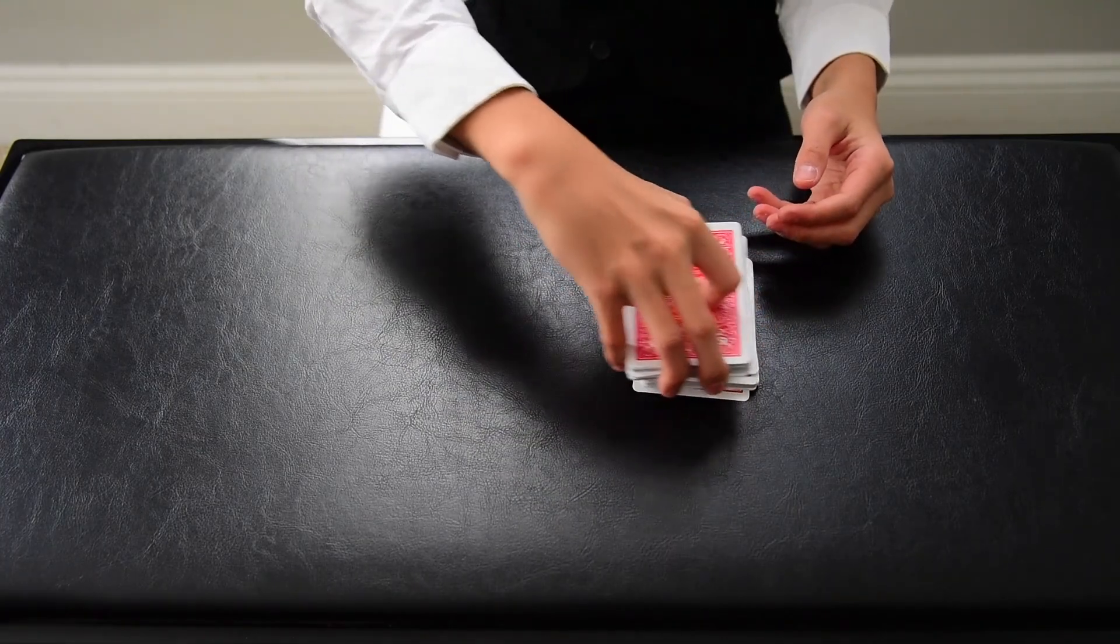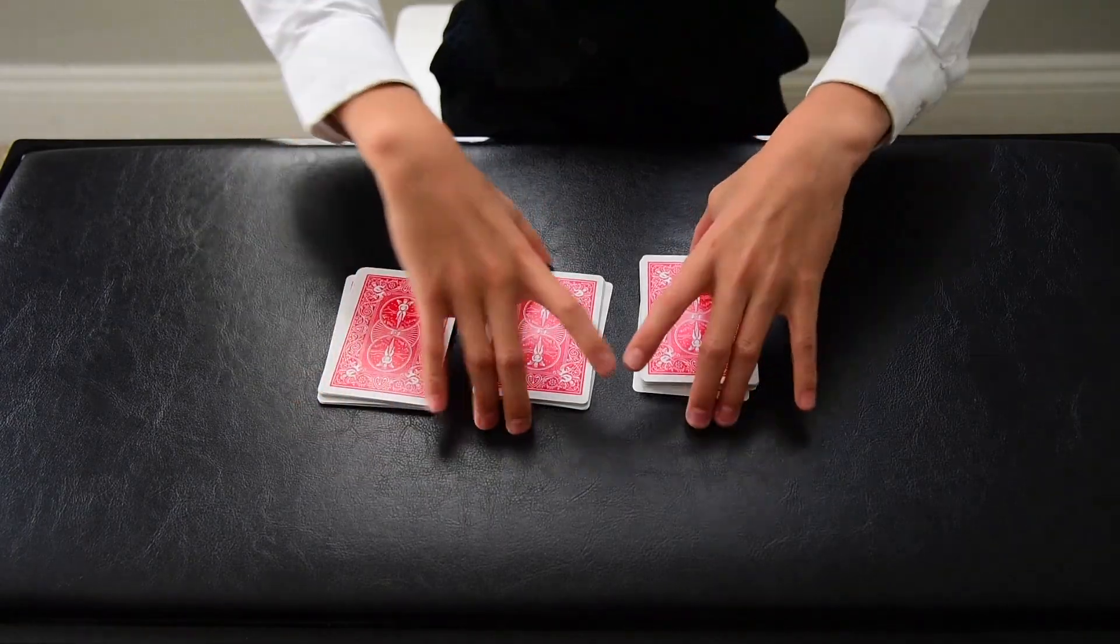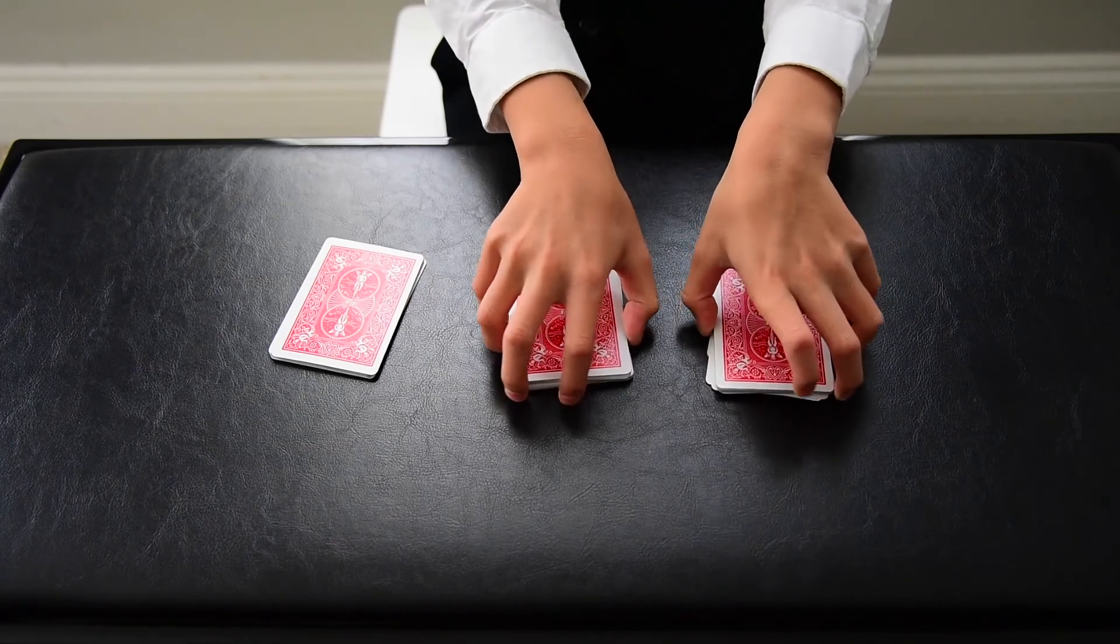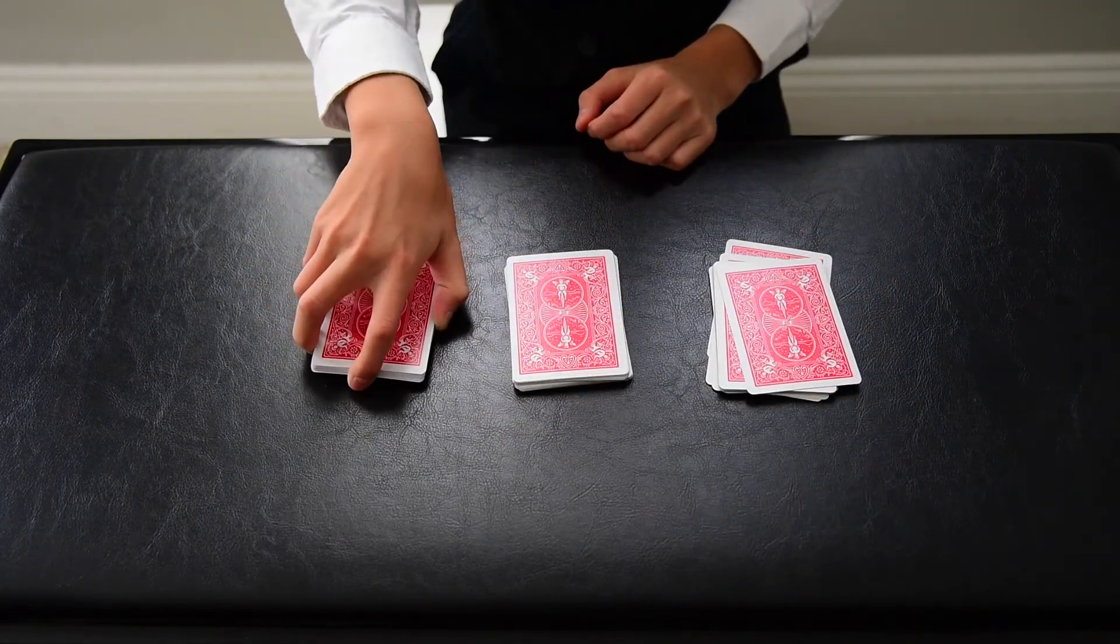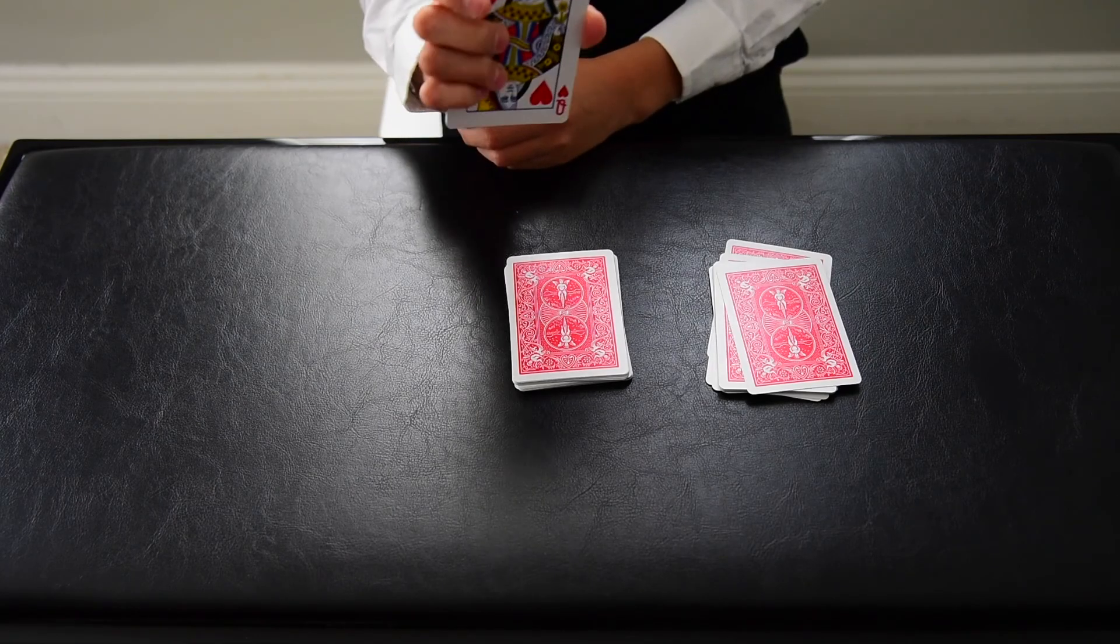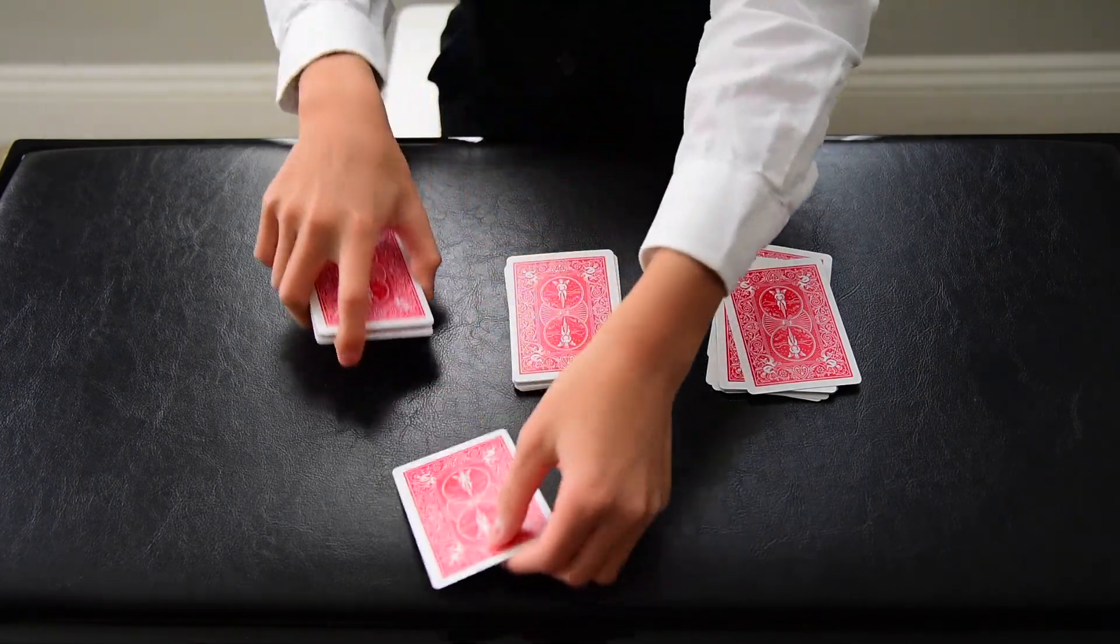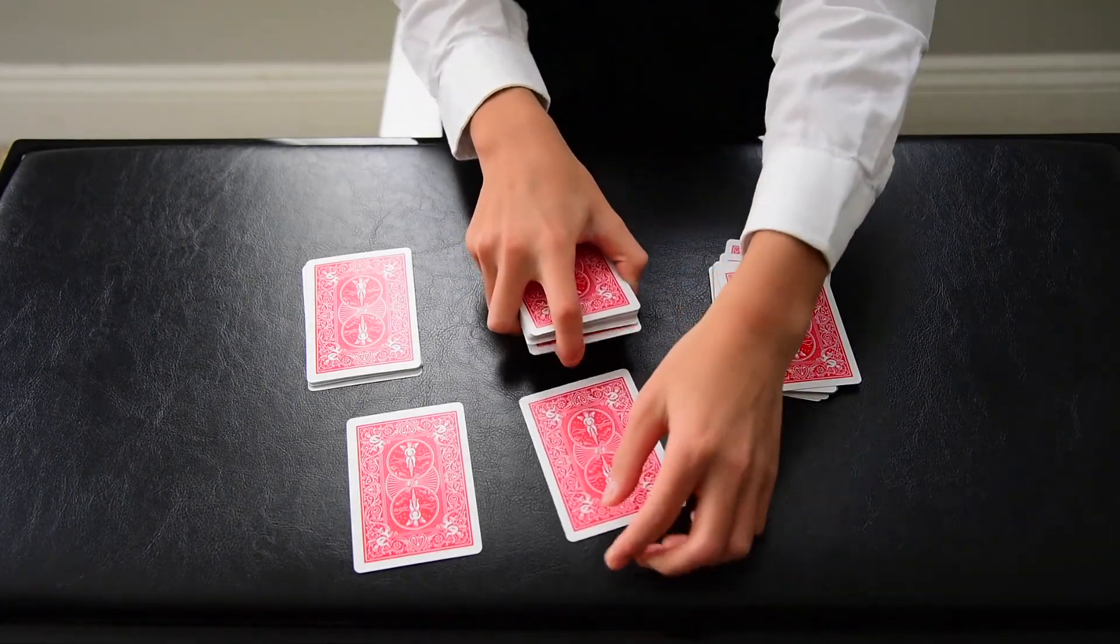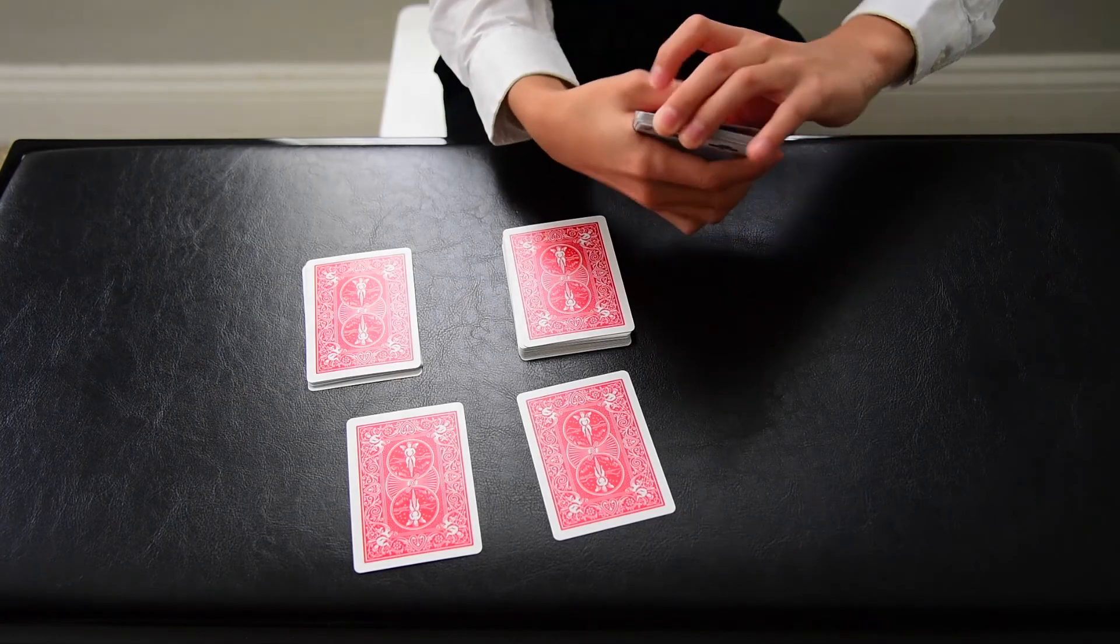Now I split the deck into three separate piles. We'll mix up the order of the piles. We take the bottom card of each of the piles. Here's the first card, here's the second card, and here's the third card.